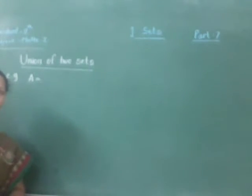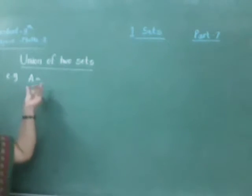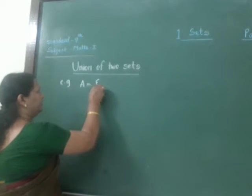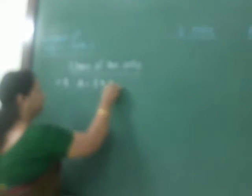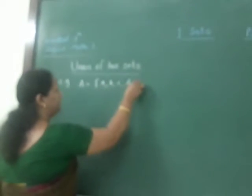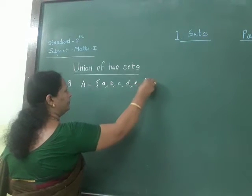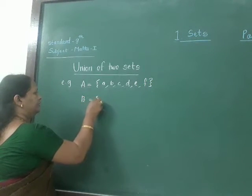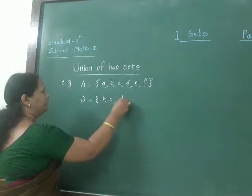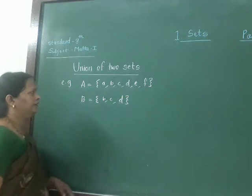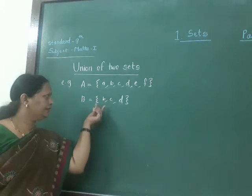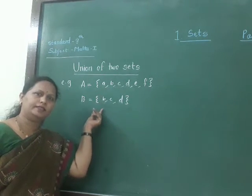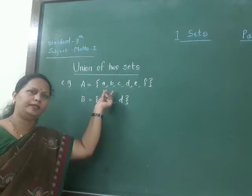Now see another example for union of two sets. For example, set A contains the letters A, B, C, D, E and F, and set B contains the letters B, C and D. In this case, set B is the subset of set A.